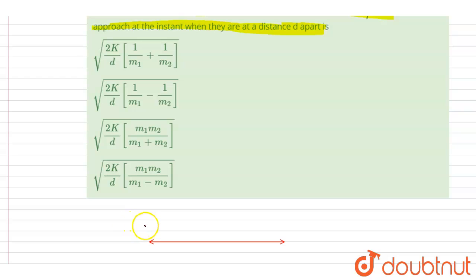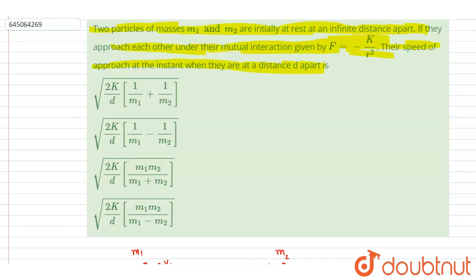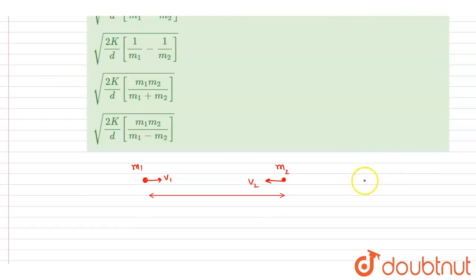At any instant when they are at distance d apart, they are moving with velocities v1 and v2. Mass m1 has velocity v1 and mass m2 has velocity v2. The speed of approach is the rate at which they are coming together — the rate at which the distance between them is decreasing — and that is v1 plus v2.